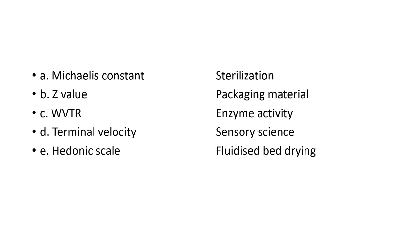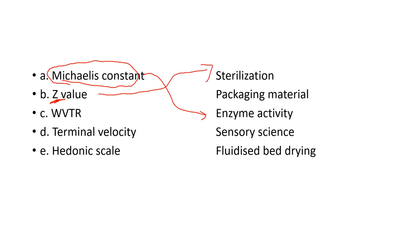Michaelis constant is associated with enzyme kinetics and enzyme activity. Z-value is used in heat treatment — it gives the temperature at which the death of microorganisms is predicted, so Z-value is associated with sterilization. WVTR (water vapor transmission rate) is associated with packaging materials — lower WVTR means better food preservation.